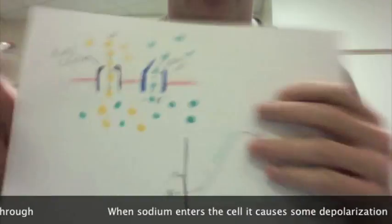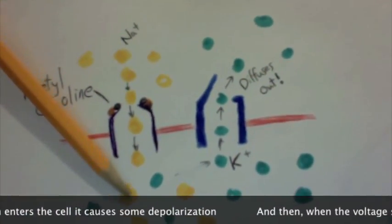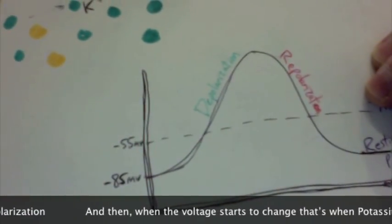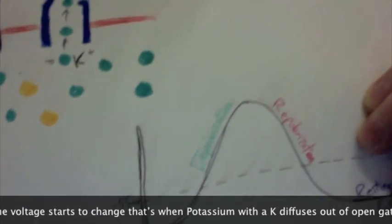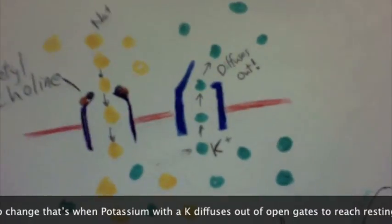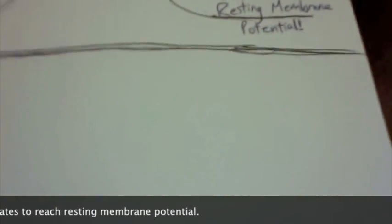When sodium enters the cell, it causes depolarization. When the voltage starts to change, that's when potassium diffuses out of open gates to reach resting membrane potential.